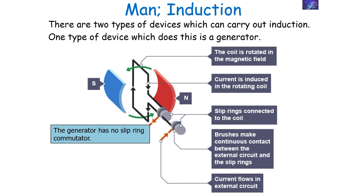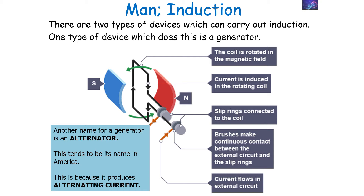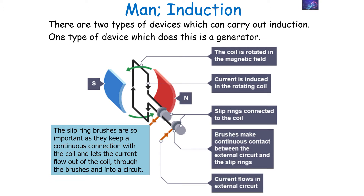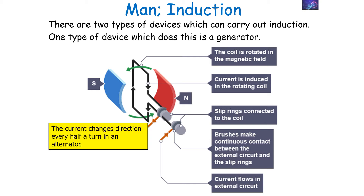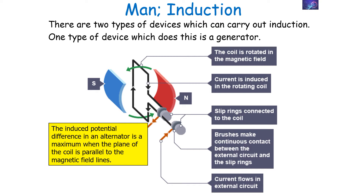The generator has no slip ring commutator, and as a result, another name for the generator is an alternator — this tends to be its name in America. We call it an alternator because it produces alternating current. The slip ring brushes keep a continuous connection with the coil and let the current flow out of the coil through the brushes and into the circuit. In an alternator, the current changes direction every half a turn. The induced potential difference is a maximum when the plane of the coil is parallel to the magnetic field, while the induced potential is zero when the plane of the coil is perpendicular to the magnetic field lines.